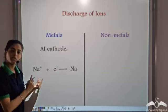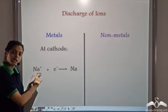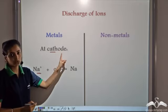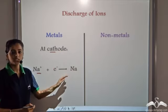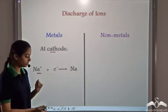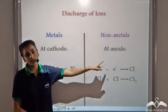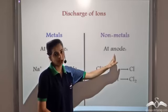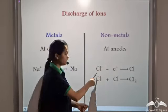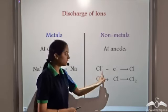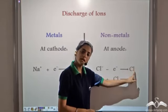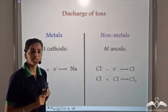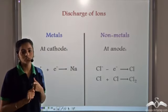Sodium, since it is Na⁺, has to gain 1 electron. So it is discharged at the negatively charged electrode — the cathode — to become neutral Na. Since the cations migrate towards the cathode, the anions migrate towards the anode. So the metals are discharged at the cathode and the non-metals are discharged at the anode. For example, Cl⁻ is discharged at the anode to become Cl, and since one Cl atom is not stable, it combines with another Cl atom to become chlorine gas.